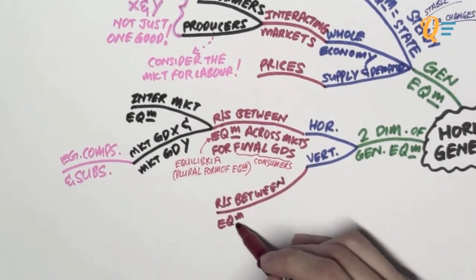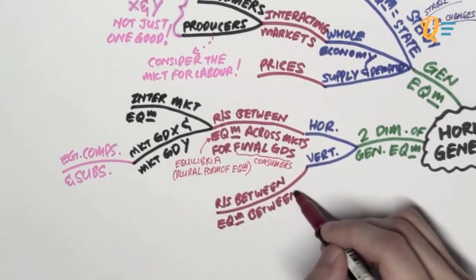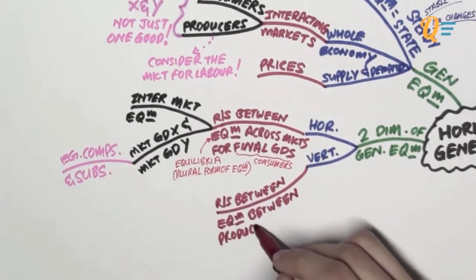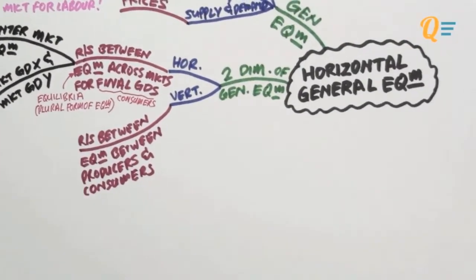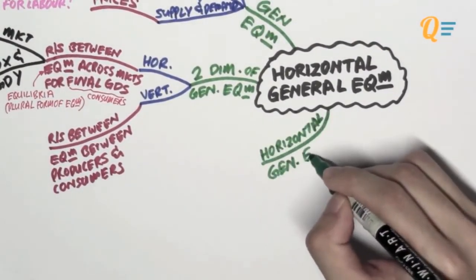Vertical general equilibrium, on the other hand, talks about the relationship between equilibria between producers and consumers. We'll talk about this in another video. Today we'll be focusing on the horizontal general equilibrium instead.